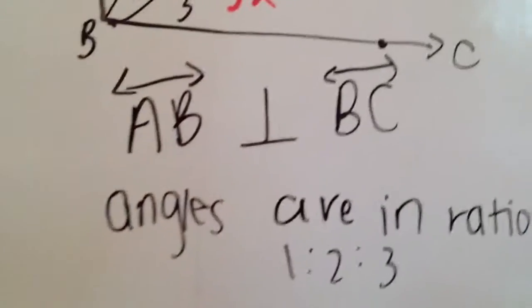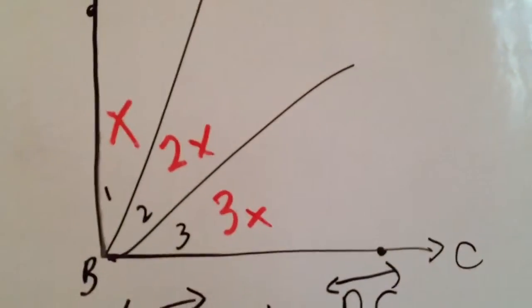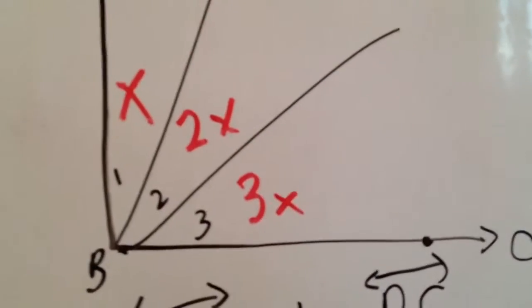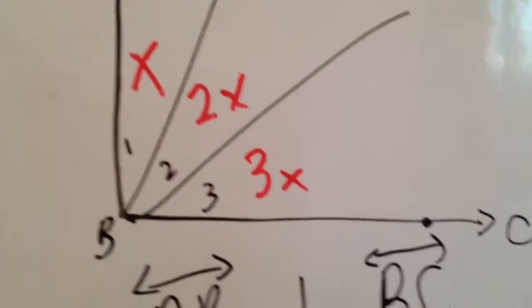So this problem asks us to find the measure of each angle. So we need to find X, 2X, and 3X. If you know X, finding the rest is easy, but we first need to find X.